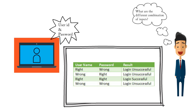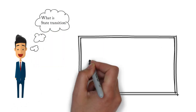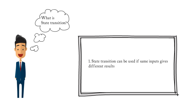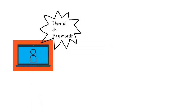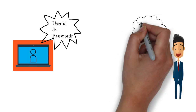So far we have seen equivalence partitioning, boundary value analysis, and decision table. Let's move to the next one: state transition. State transition is used when the same set of inputs gives different results. This technique can be used to derive the test conditions in such cases. Let's take the same user authentication example.